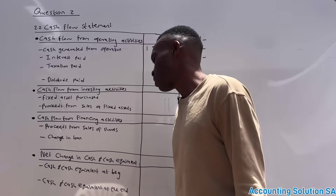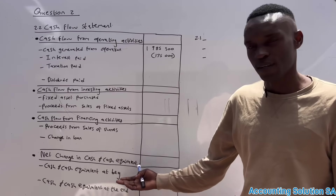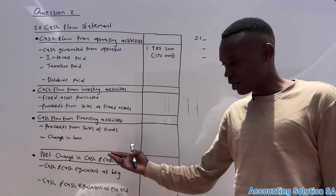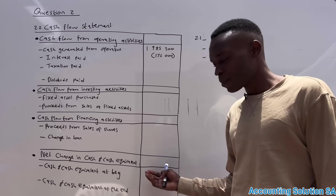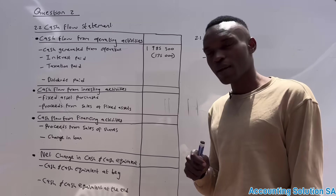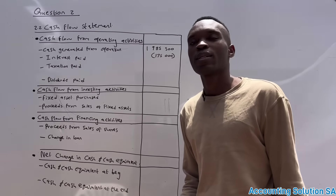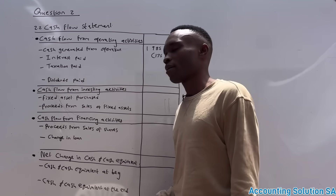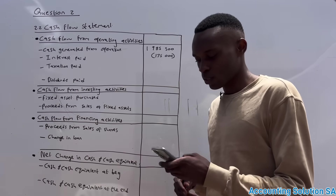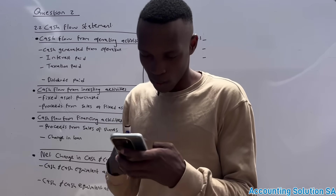After that, we calculate the net change in cash and cash equivalents. This is straightforward because you get the opening and closing balance from the balance sheet, but sometimes only the opening balance is given and you need to calculate the closing balance — I will show you that in this question.